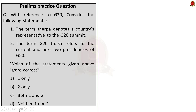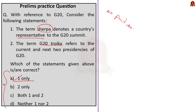With reference to G20, consider these statements: the term Sherpa denotes a country's representative to the G20 summit; the term G20 troika refers to the current and the next two presidencies of G20. The correct answer is option A: one only. The G20 Sherpa is a high-ranking official designated by a G20 member country to represent their leader in preparation for the annual G20 leaders' summit. Statement two is incorrect — the troika consists of the previous, current, and future holders of the presidency. In 2023, the troika consisted of Indonesia, Brazil, and India.